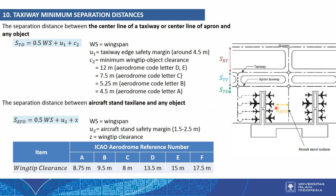The separation distance between an aircraft stand taxi lane and any object (SATO) is calculated as: half the wingspan (WS) plus U2 (aircraft stand safety margin, approximately 1.5 to 2.5 meters) plus Z (wing-tip clearance from the ICAO table).